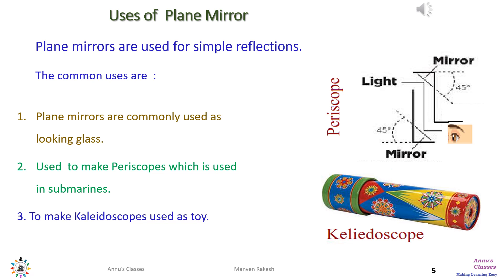Other uses are to make the periscope used in submarines where the submarine is below the water level and it has to see the objects above the water level. Kaleidoscope is the toy used by kids to see various shapes by rotating it.